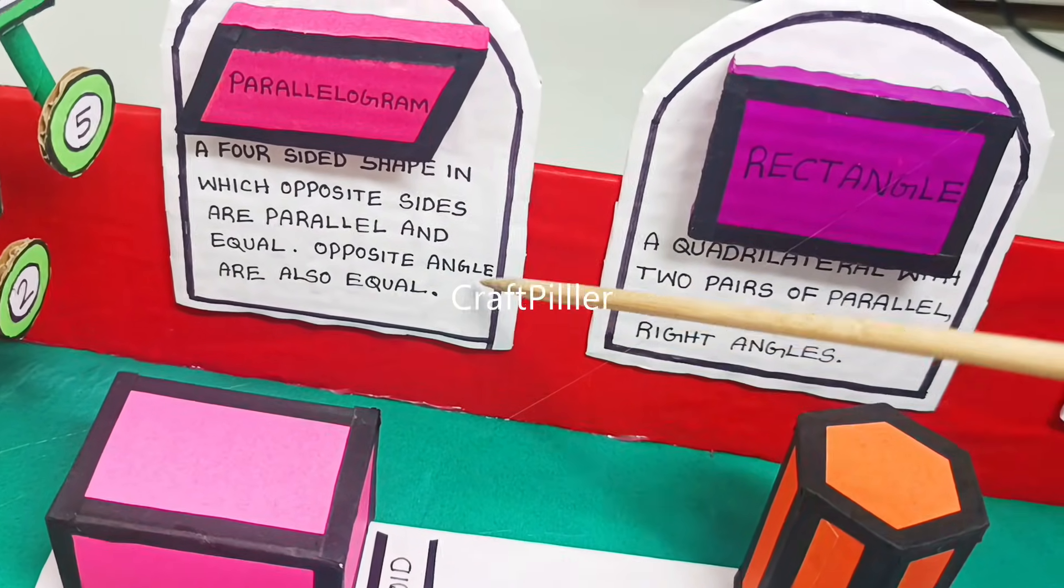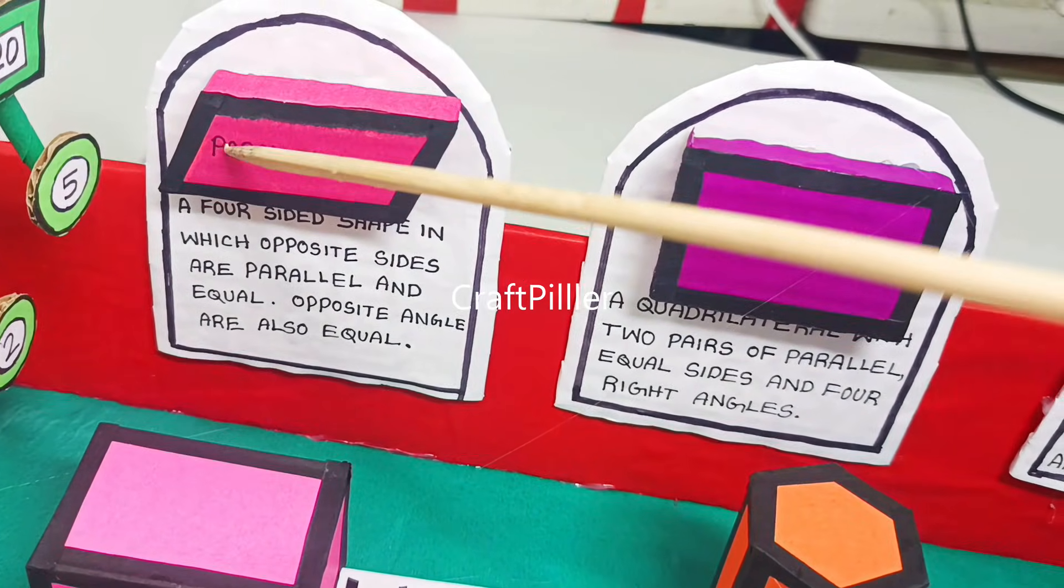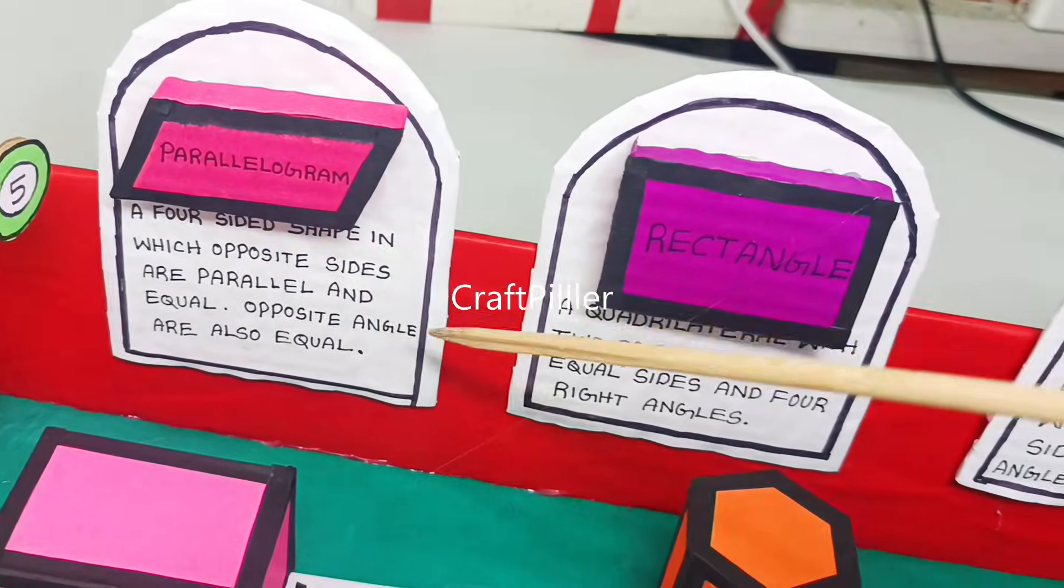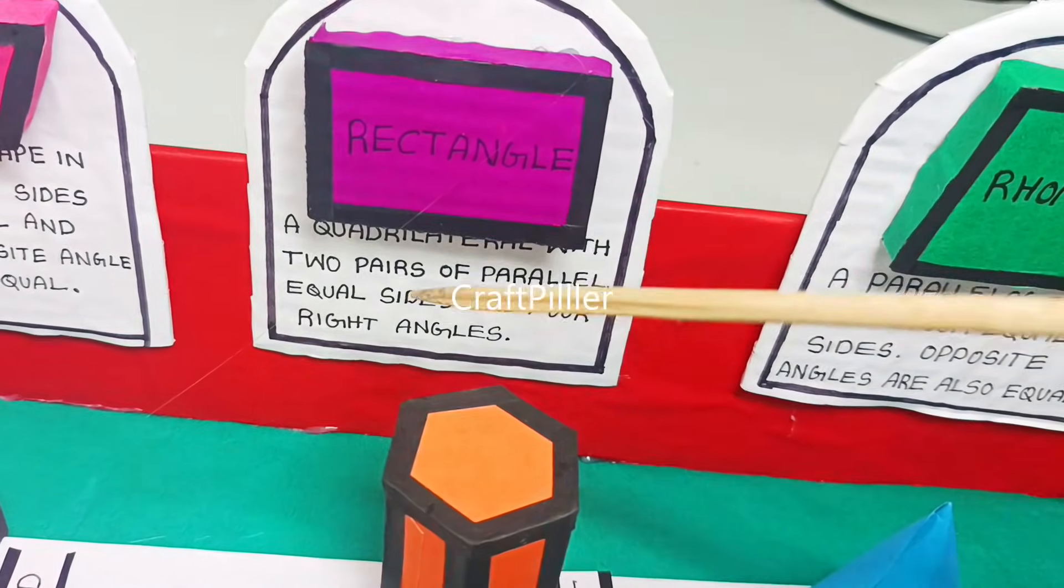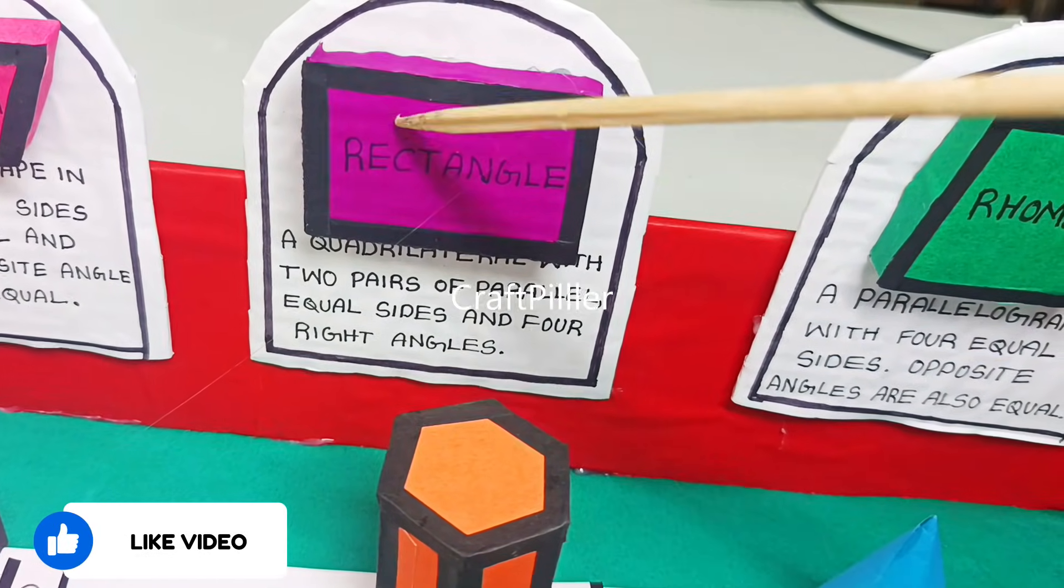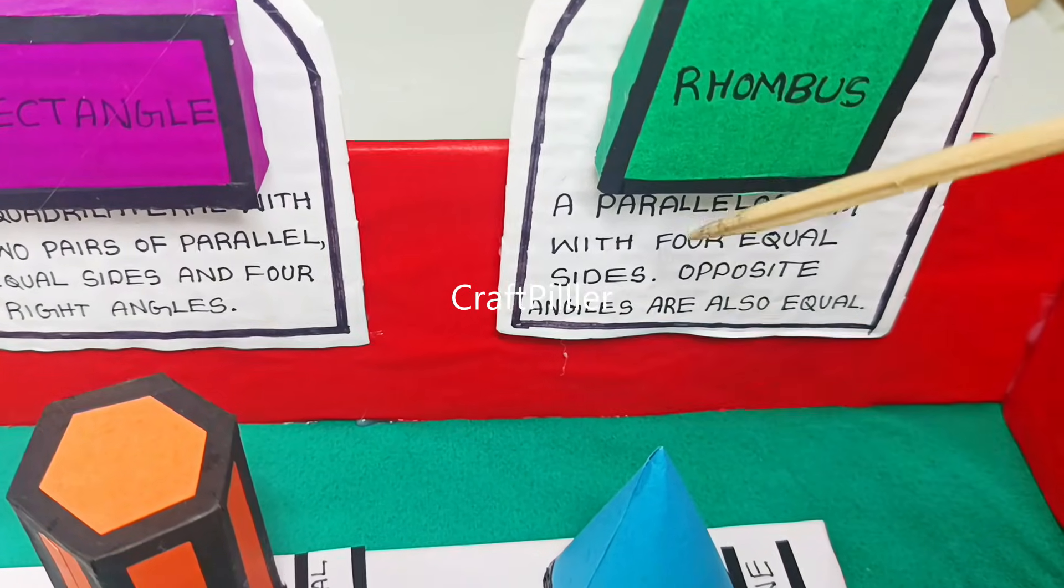These angles are equal. We have a rectangle, also a quadrilateral with two pairs of parallel equal sides and four right angles of 90 degrees. We have rhombus as well, which is a parallelogram with four equal sides and opposite angles that are equal.